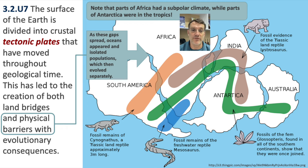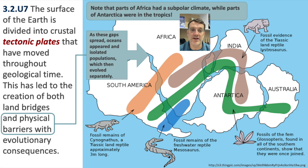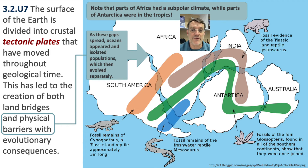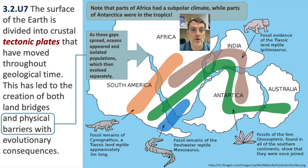Some of the evidence for evolution is that we find fossil remains on land masses that are currently very far apart, from the exact same time period, showing those land masses were once together. For example, the Cynognathus reptile's fossils are found in both South America and Africa. Glossopteris fern fossils are found across multiple continents — including Antarctica, which today is covered by a thick ice cap. This shows that all these land masses were once connected, allowing these species to migrate back and forth.